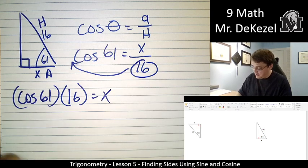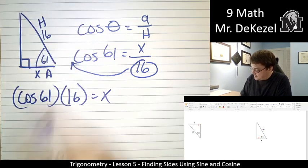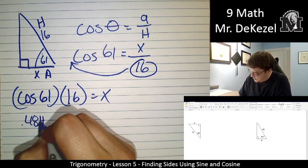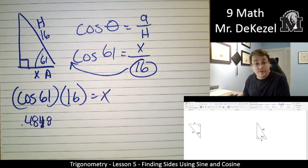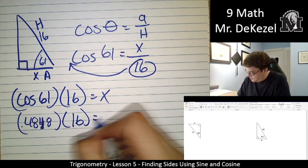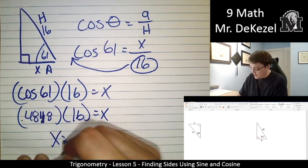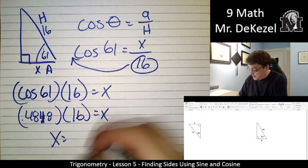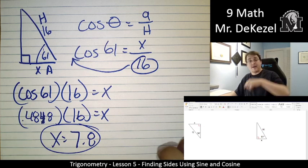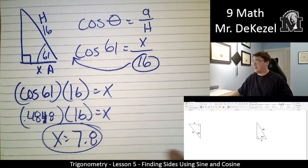That would be, let's see. Let's do the cosine of 61. 0.4848. Should not be another decimal there. Just so you know. 0.4848. Equals x. And we'll go ahead and we'll do that in our calculator. 7.8. That's the value of that side. And again, it's smaller than a hypotenuse. That makes sense overall.